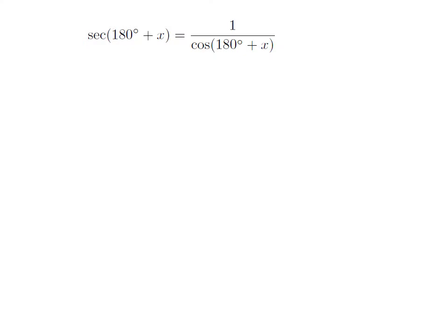As we know, secant of theta is equal to 1 divided by cosine of theta. So secant of 180 degree plus x is equal to 1 divided by cosine of 180 degree plus x. We also know the trigonometric identity: cosine of 180 degree plus x is equal to minus cosine of x.